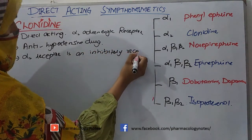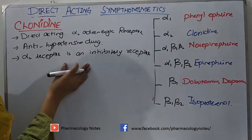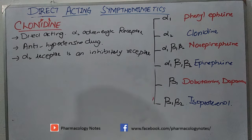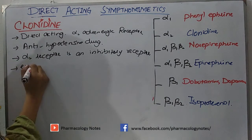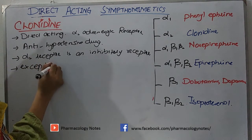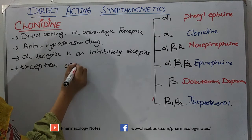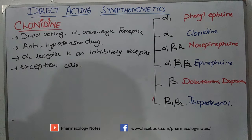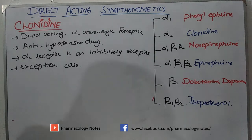When you stimulate an inhibitory receptor, it will cause inhibition, not stimulation. So this is an exceptional case in direct-acting sympathomimetics. When clonidine acts on alpha-2 adrenergic receptors, it stimulates those inhibitory receptors. Do you know where this alpha-2 receptor is and what its function is?